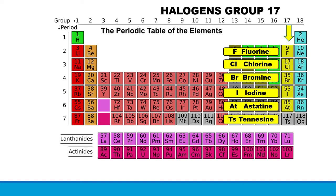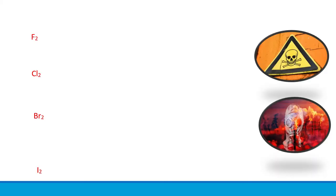Now let's begin with looking at the physical appearances of these elements in their diatomic molecule state. The fluorine molecule is seen as pale yellow gas at room temperature.